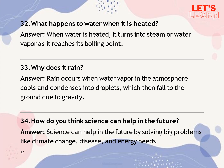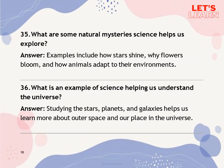Question 32: What happens to water when it is heated? When water is heated, it turns into steam or water vapour as it reaches its boiling point. Question 33: Why does it rain? Rain occurs when water vapour in the atmosphere cools and condenses into droplets, which then fall to the ground due to gravity. Question 34: How do you think science can help in the future? Science can help in the future by solving big problems like climate change, disease and energy needs. Question 35: What are some natural mysteries science helps us explore? Examples include how stars shine, why flowers bloom and how animals adapt to their environments.